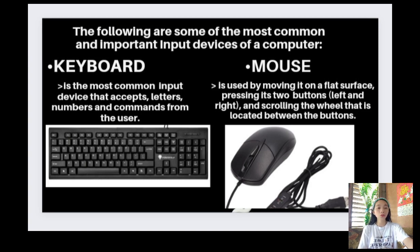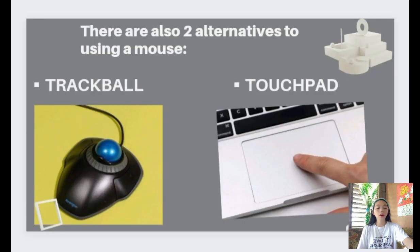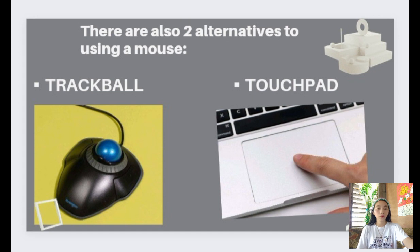First, we have the keyboard — the most common input device that accepts letters, numbers, and commands from the user. The mouse is used by moving it on a flat surface, pressing its two buttons — left and right — and scrolling the wheel located between the buttons. There are also two alternatives to using a mouse: first is the trackball, a ball that can rotate using a finger or the palm of a hand to move the pointer. Next is the touchpad, also called trackpad — a touch-sensitive pad that lets the user move the pointer by touching and dragging a finger on the pad.